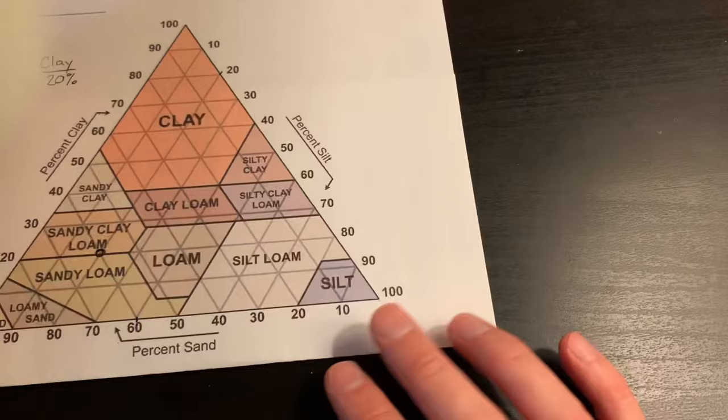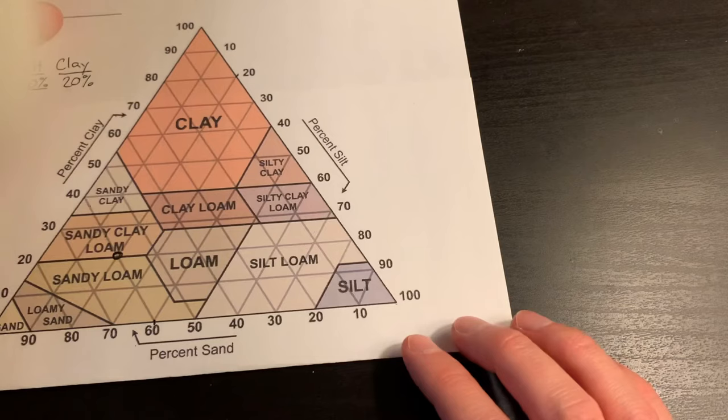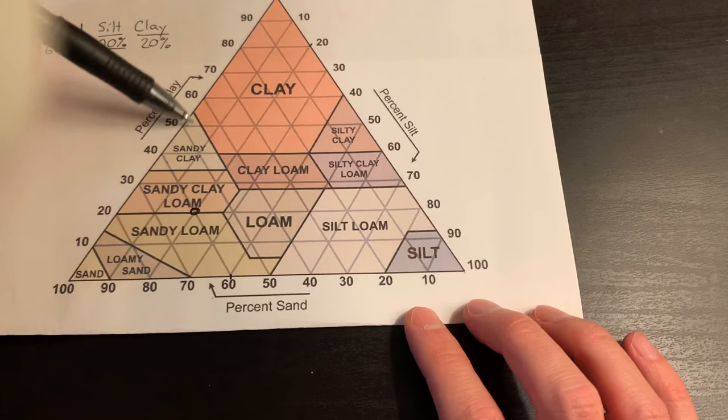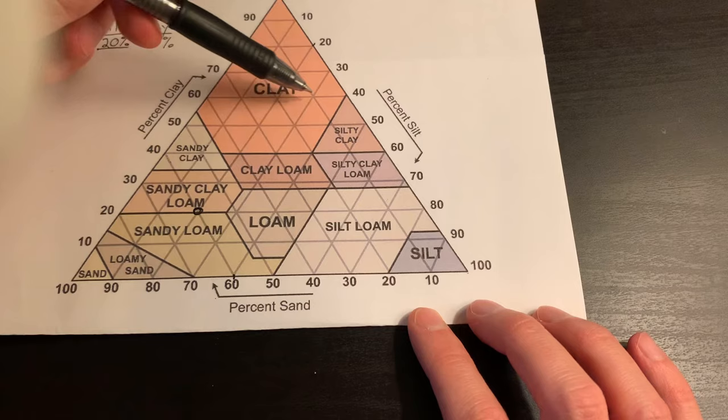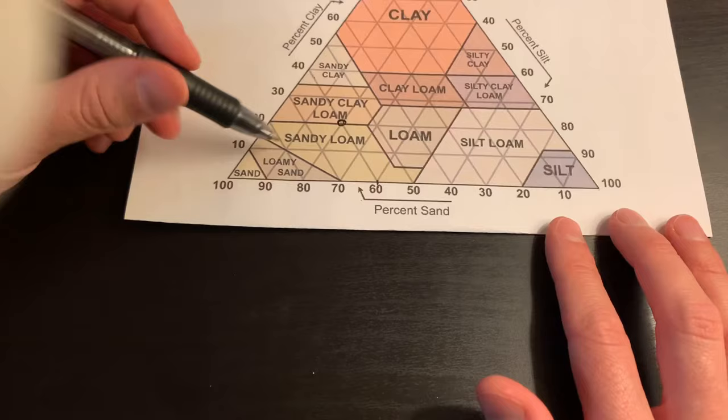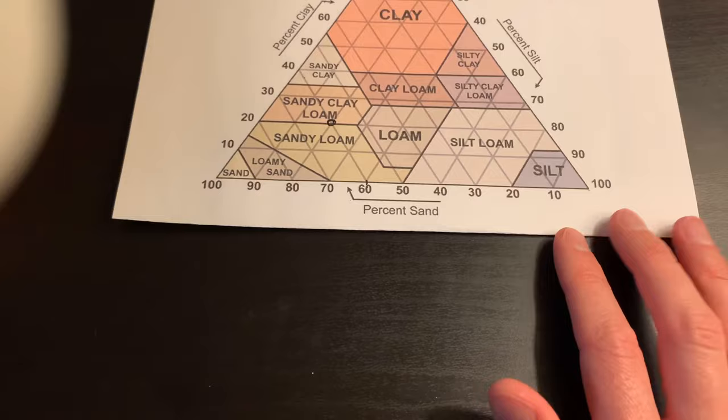Notice how large the clay piece of the triangle is. What that tells you is if you have 60 percent clay, no matter what else you have, you are going to be considered a clay soil. Whereas if you have more than 90 percent sand, that is the only thing that will make you a pure sand.